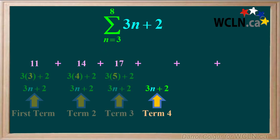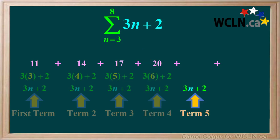For term 4, again we'll use 3n plus 2. This time n equals 6, so the value of term 4 is 20. For term 5, we'll start with the same function. This time n equals 7, so the value of term 5 is 23.